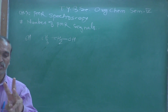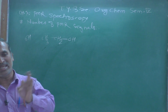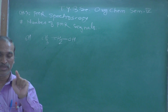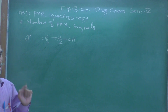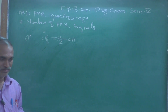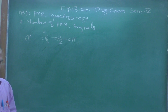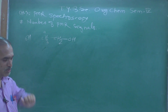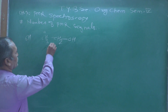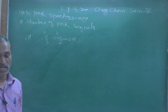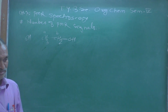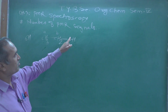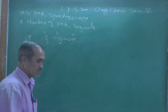In the methyl group there are three protons, all chemically equivalent — they produce only one signal, so we label them as proton A. The methylene CH2 group has two protons, but they are different from the methyl protons, so we label them as proton B. The proton attached to the heteroatom (oxygen) has a totally different environment than the others, so we label it as proton C.